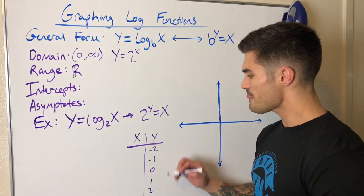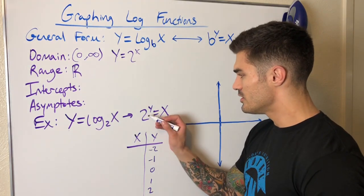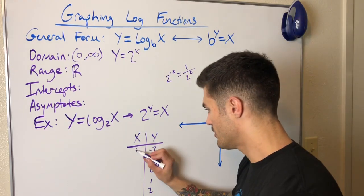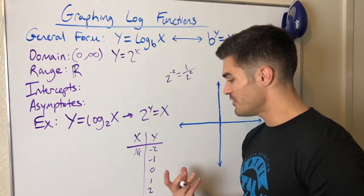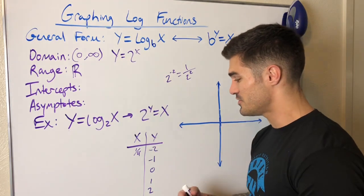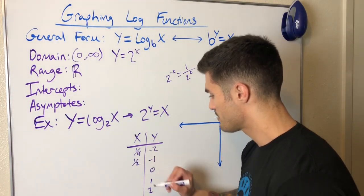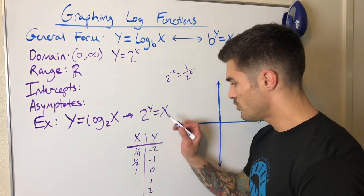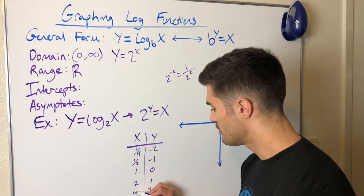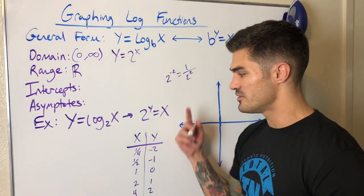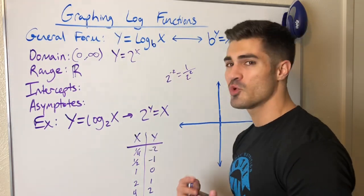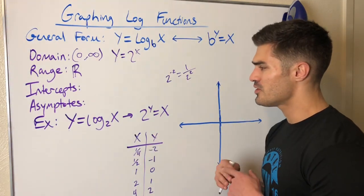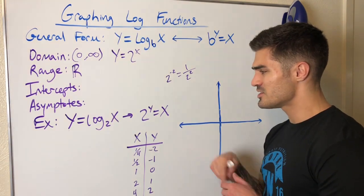I'll plug in y values from negative two to two. Plug in y equals negative two: I get 2 to the negative two, which equals one-fourth. Plug in y equals negative one: I get one-half. Plug in y equals zero: I get one — anything to the zero power is one. Plug in y equals one: I get x equals two. Plug in y equals two: I get x equals four. All the x's and y's are flipped because these are inverses.